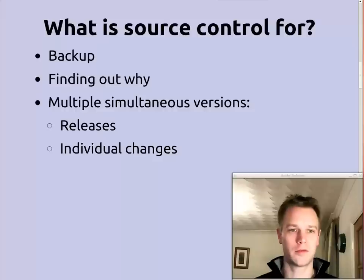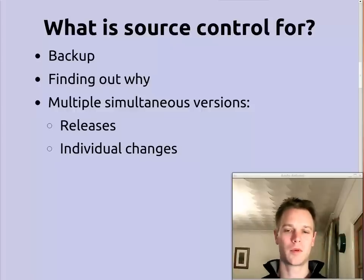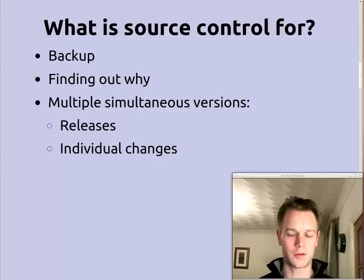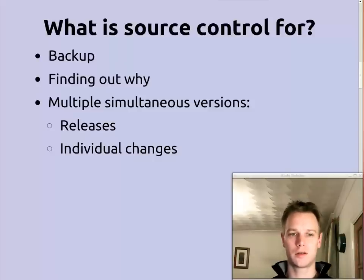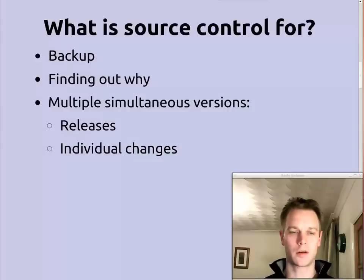Another very important reason for having source control is because you're going to have multiple simultaneous versions that you want to work on at the same time. You can behave logically and move little bits of code back and forth between those versions in a sensible and controlled way. Examples of when you would need simultaneous versions: when you've got several releases that you need to support simultaneously, but also if you're working on a change that you don't want anyone else to look at yet — it's nice to be able to work on something as an individual and merge it in when you're ready.